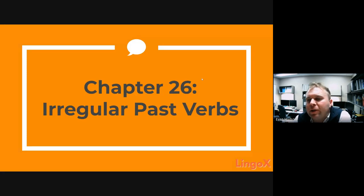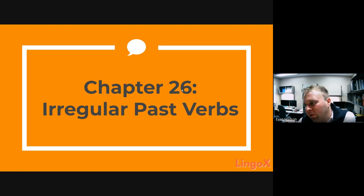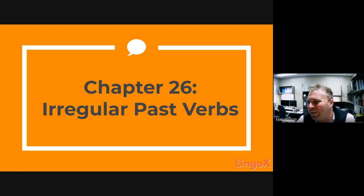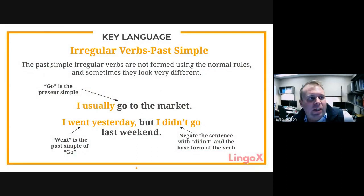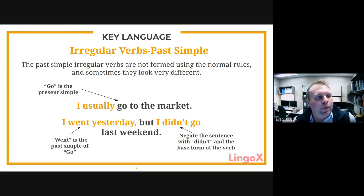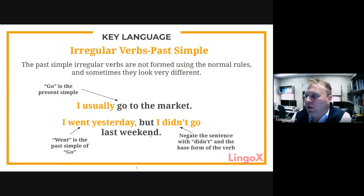The class will continue talking about the past tense, this time focusing on irregular verbs. Irregular verbs don't follow any patterns, which is why they're called irregular. They're not formed using normal rules and sometimes look very different — for example, 'go' in the present simple becomes 'went' in the past: 'I went yesterday' but 'I didn't go last weekend.'